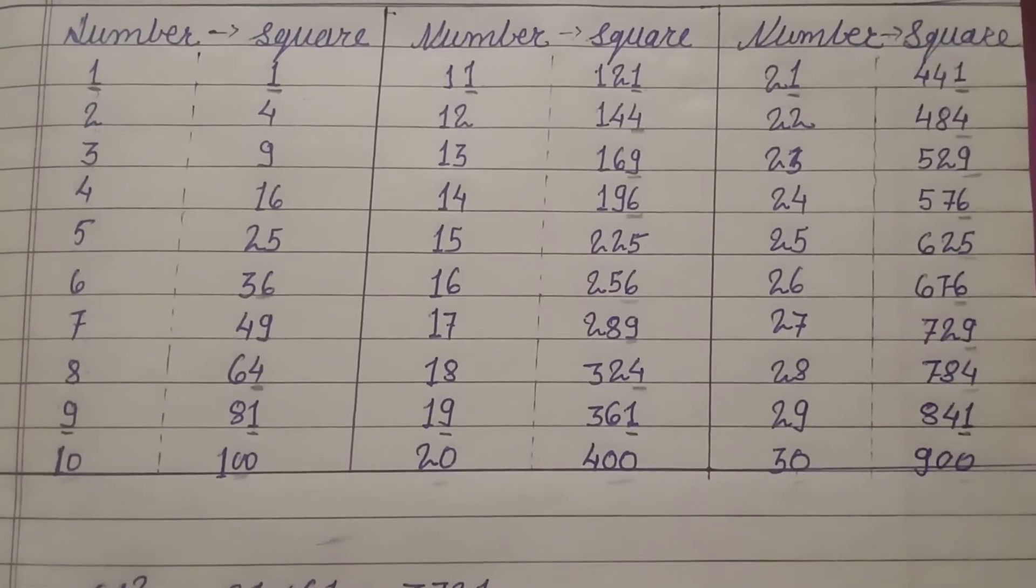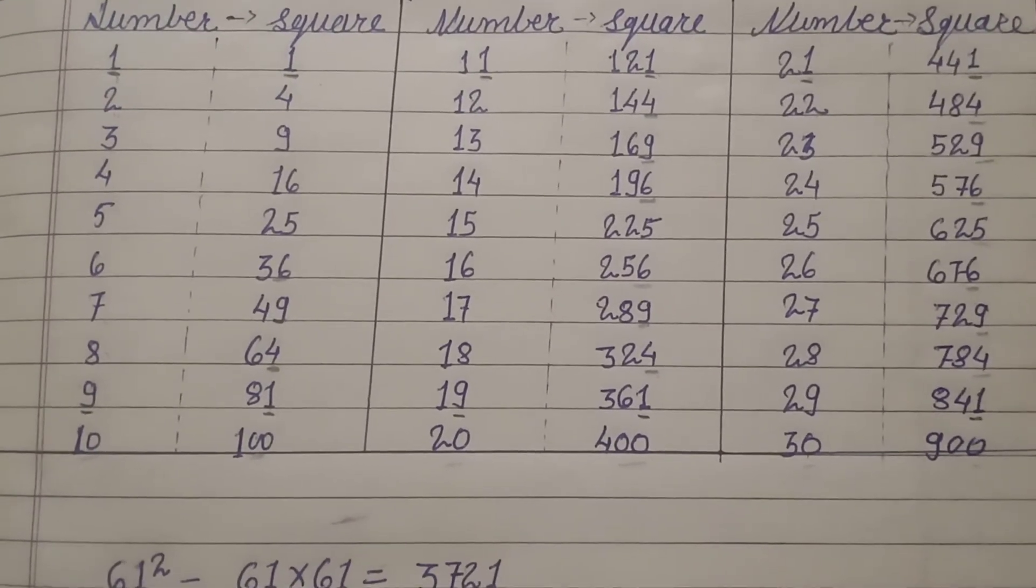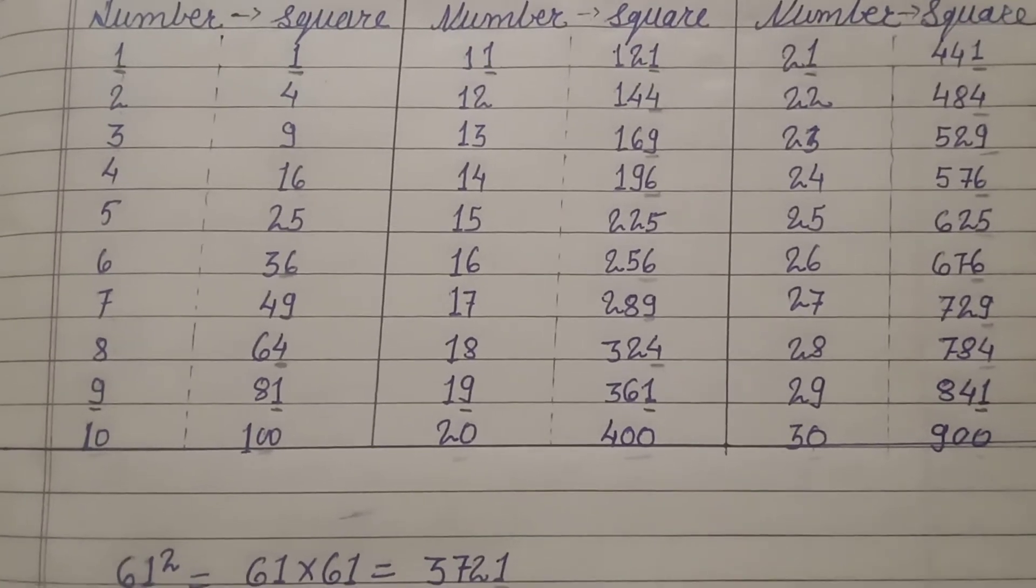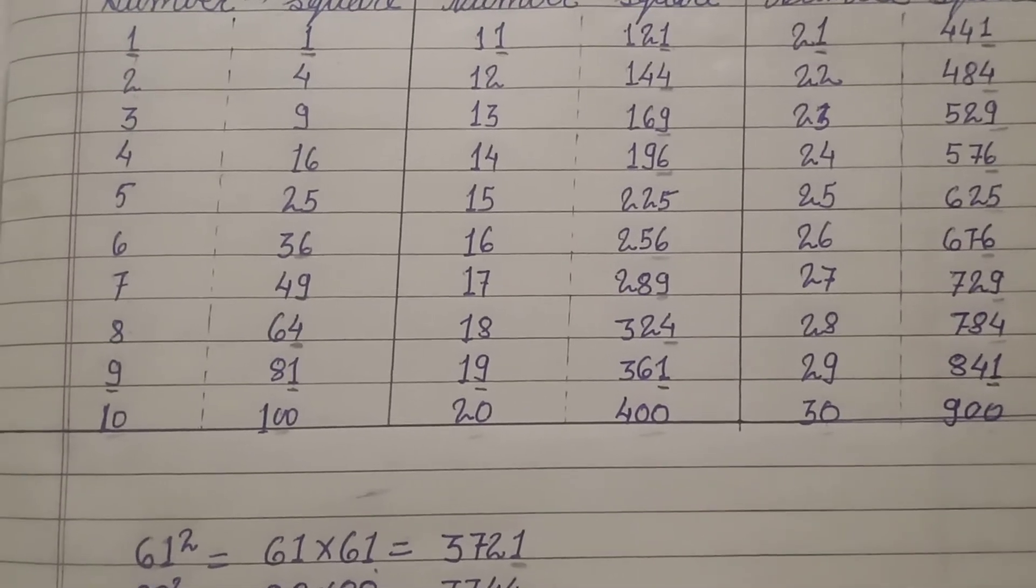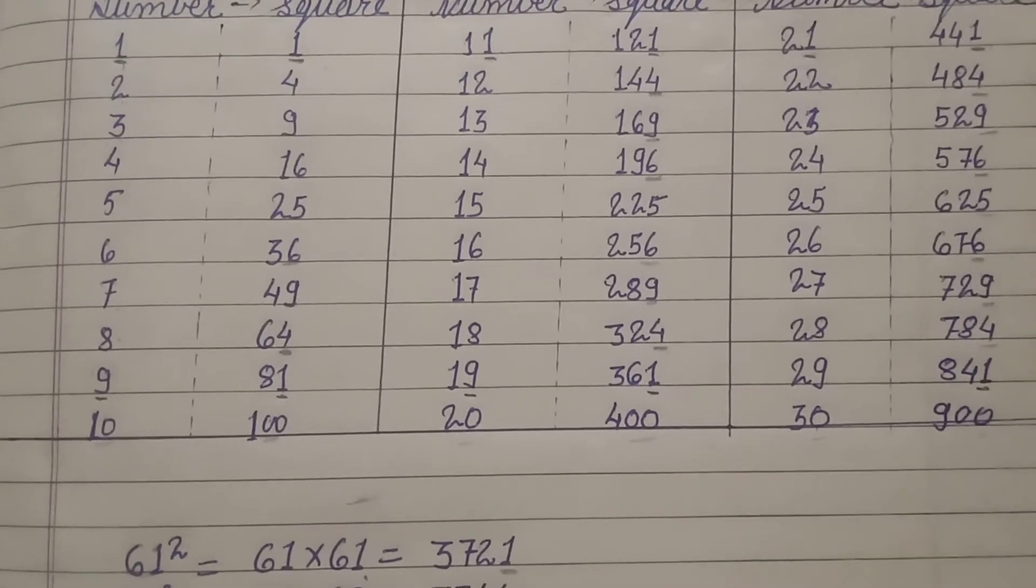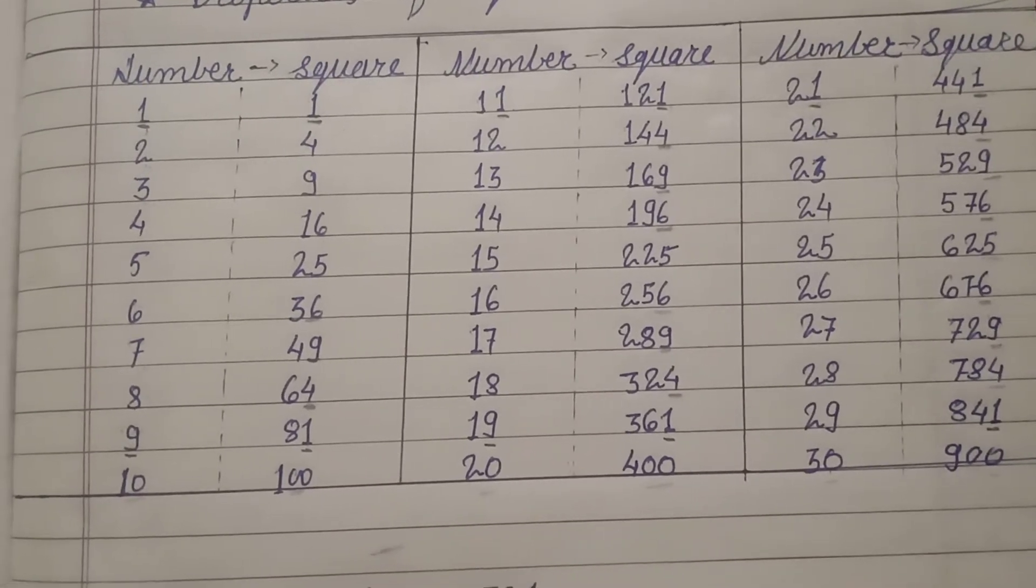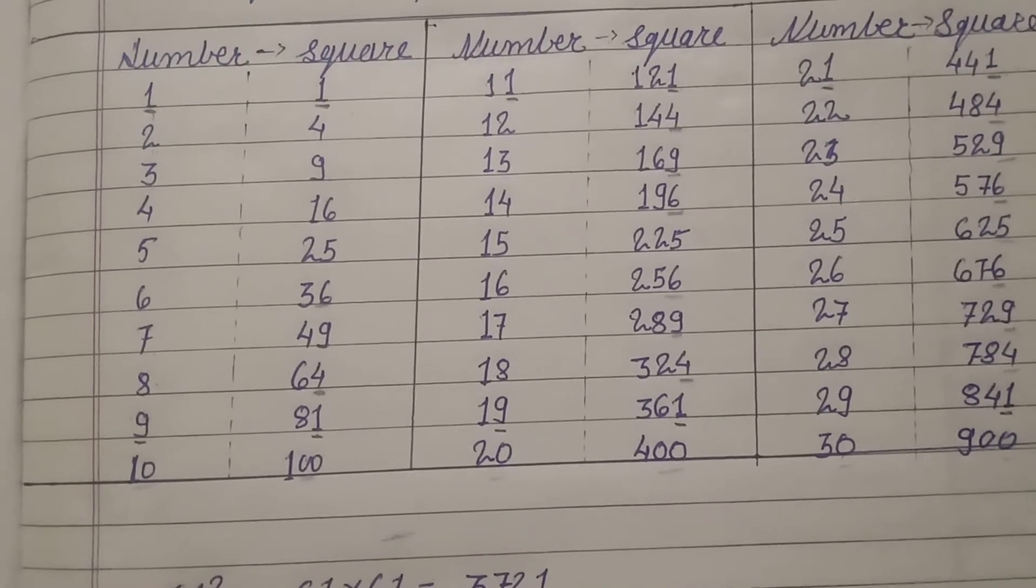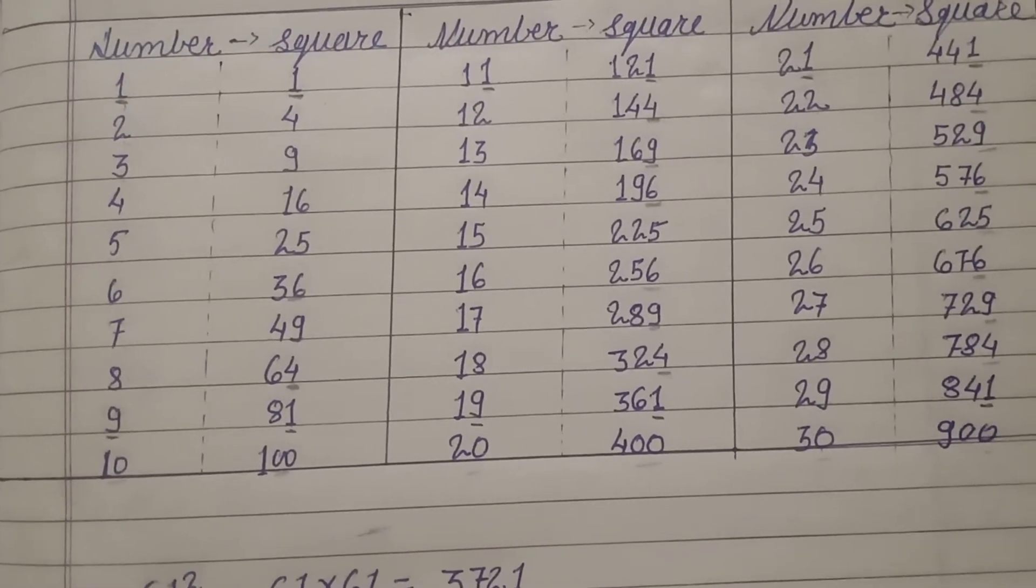Again I have opened the chart which I have prepared to show the squares of the numbers. Here you can see 1 squared is 1, 3 squared is 9, 5 squared is 25, 7 squared is 49, 9 squared is 81. These are the odd numbers and square of these odd numbers are also odd numbers. You can observe 11 squared is 121, 19 squared is 361, both odd numbers.